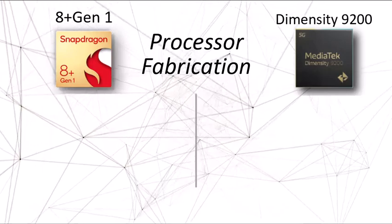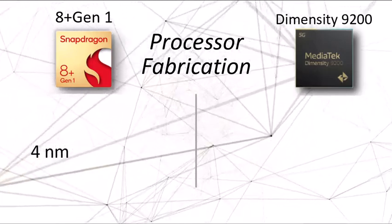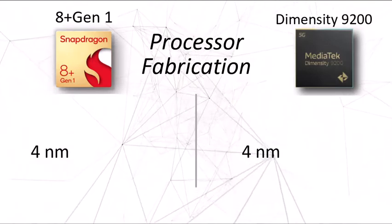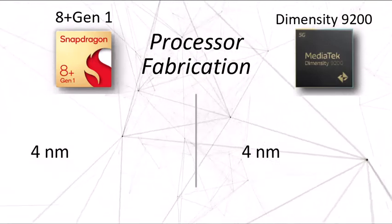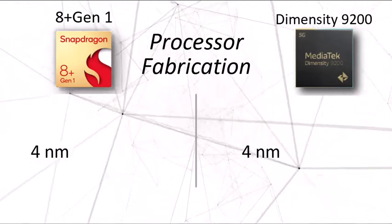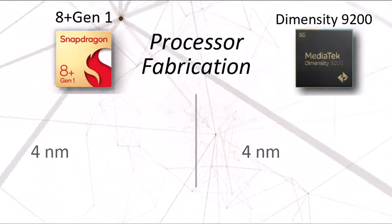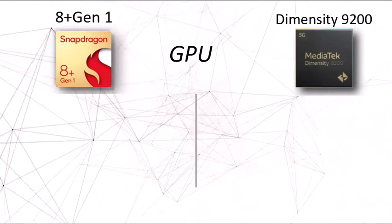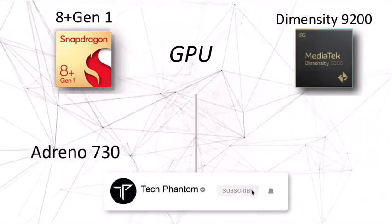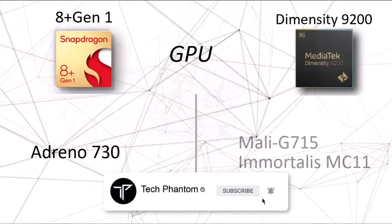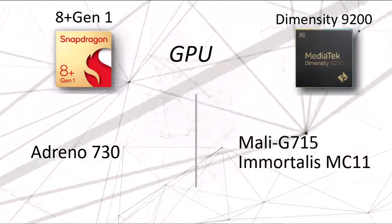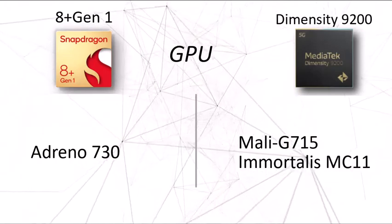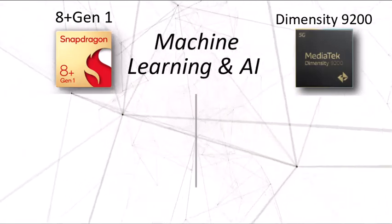Both processors come with a 4nm architecture, meaning they are equally power optimized. Moving on to GPU performance, the Snapdragon 8 Plus Gen 1 comes with the Adreno 730, whereas the MediaTek Dimensity 9200 comes with the Mali-G715 Immortalis MC11, which is the latest GPU from MediaTek.